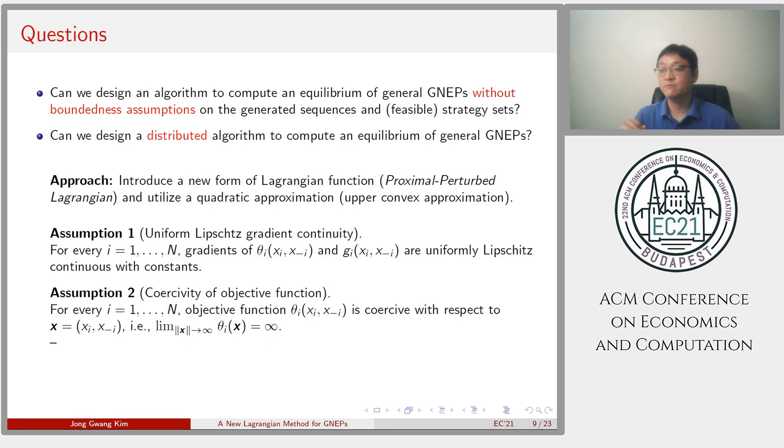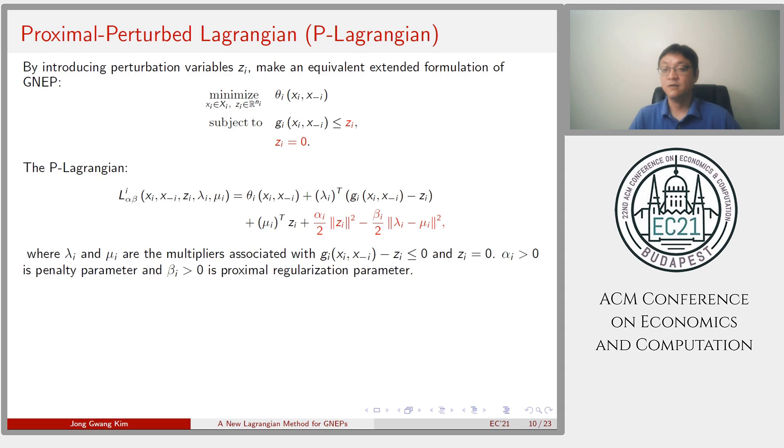Indeed, I provide the answer to both questions by introducing a new form of Lagrangian function and utilizing a quadratic approximation. I also made two standard assumptions. Uniform Lipschitz gradient continuity and the coerciveness of the objective function.